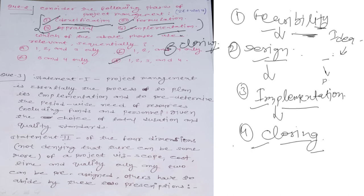If a fifth option is given, it would be closing. So the steps are fixed: feasibility analysis, designing, implementation, and closing — then finally contract, standards, portfolio managers, program managers, and other important project management concepts, which we will complete subject-wise. The answer for this question is D.